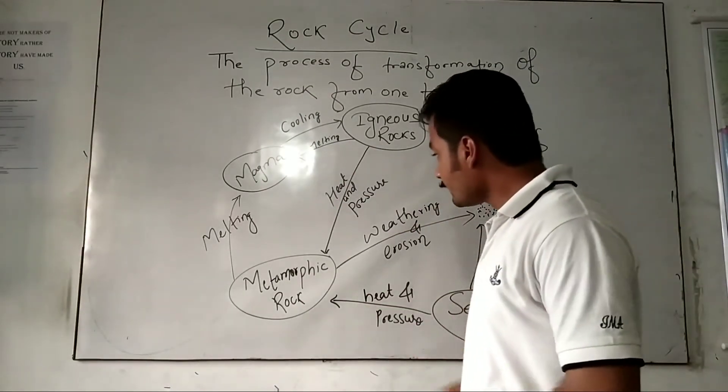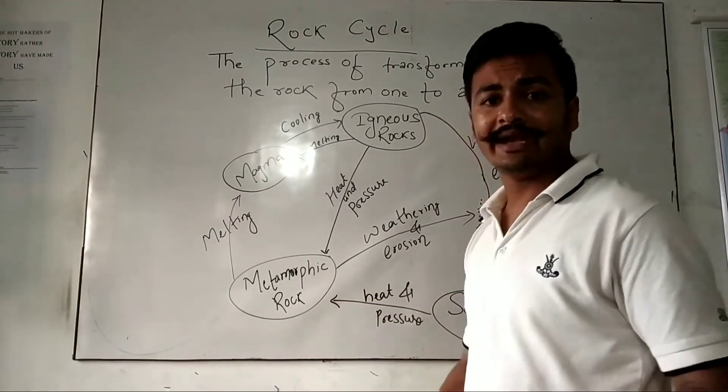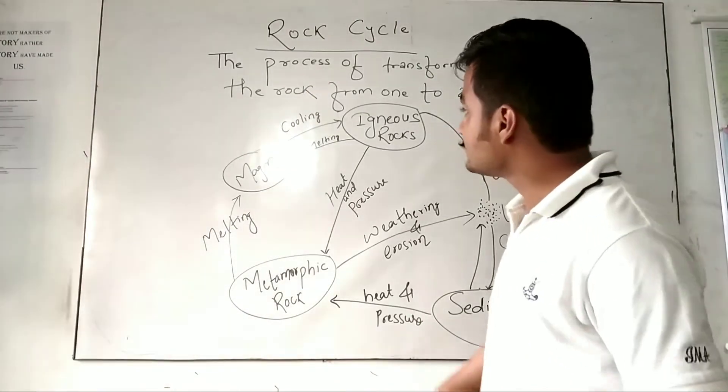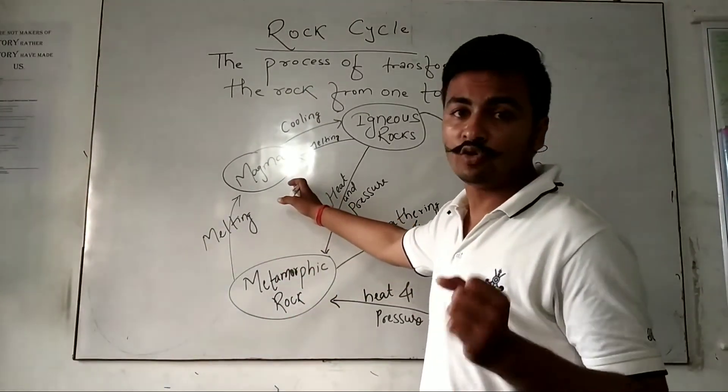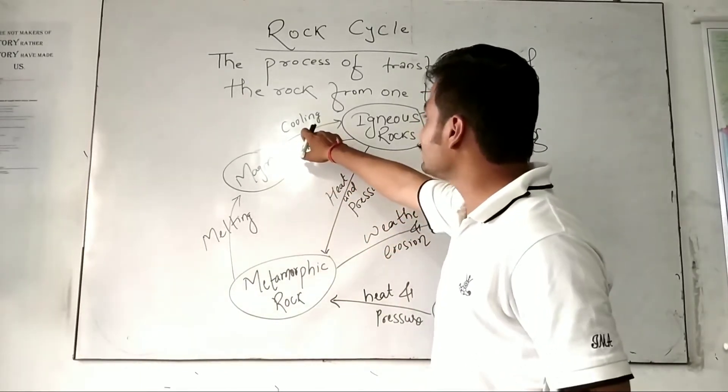Let's proceed from here. When metamorphic rock melts due to extreme temperature, it once again converts into magma. And when this magma cools down...